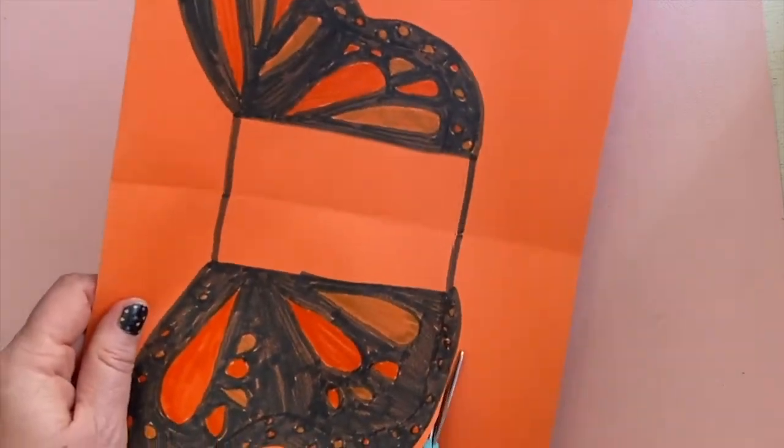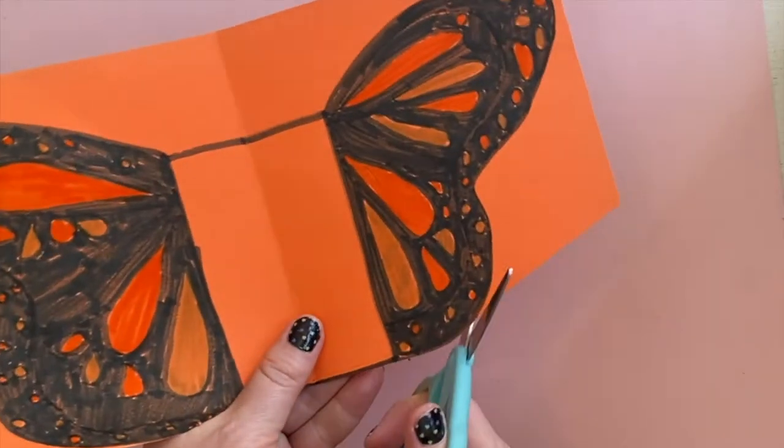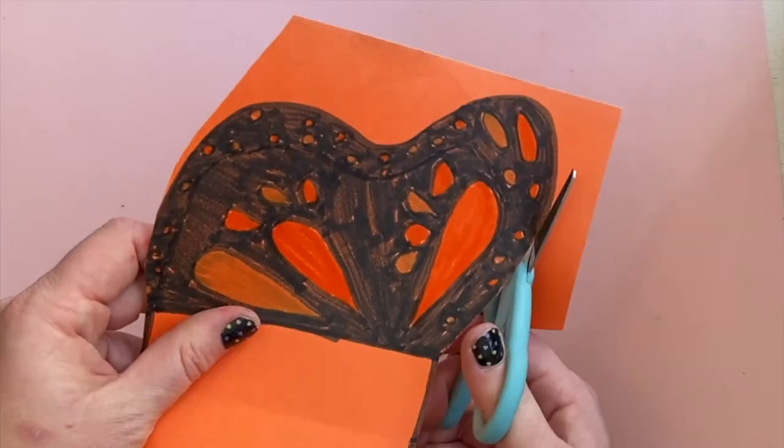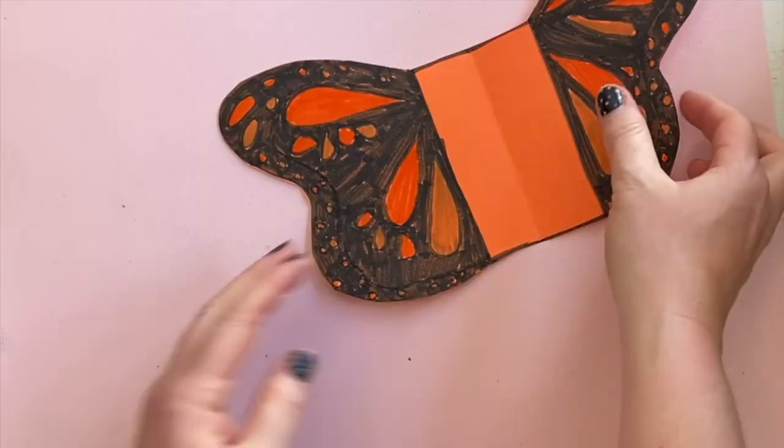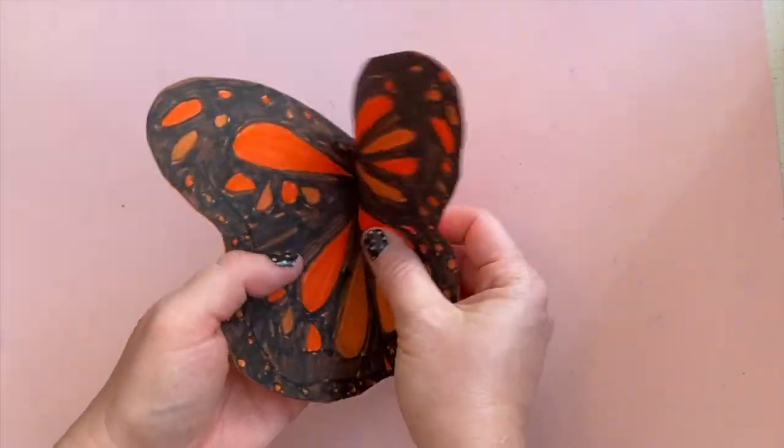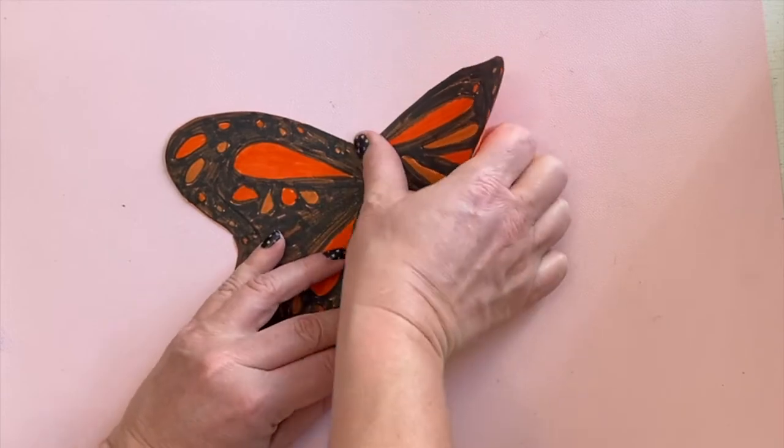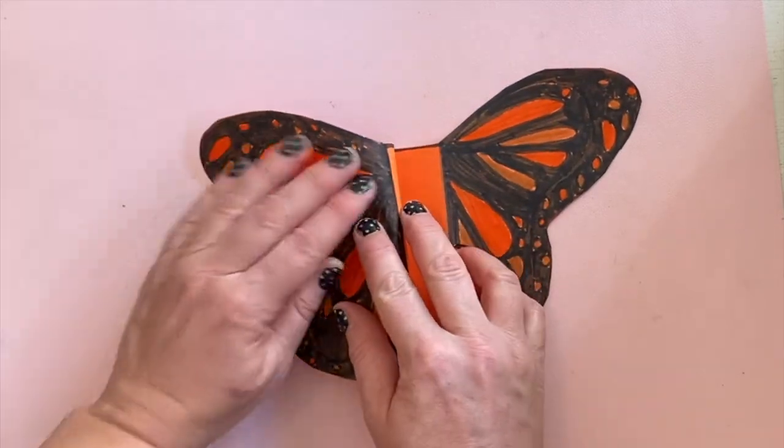Next we cut out the whole entire thing. We already have a fold down the center. Now we need to fold the wings back, right along that line where the rectangle ends. Do that on both sides.